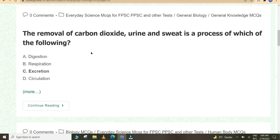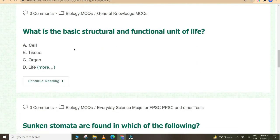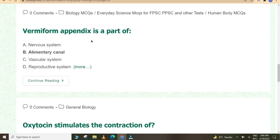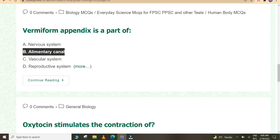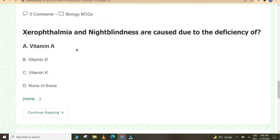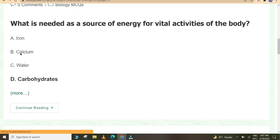The removal of carbon dioxide, urine, and sweat is a process of excretion. The color of blood is red due to hemoglobin. What is the basic structural and functional unit of life? Cell. Sunken stomata are found in xerophytes. Vermiform appendix is a part of elementary canal. Oxytocin stimulates the contraction of uterus. Xerophthalmia and night blindness are caused due to deficiency of vitamin A. The number of chambers in amphibian's heart is three.